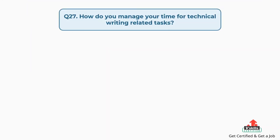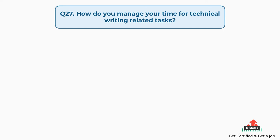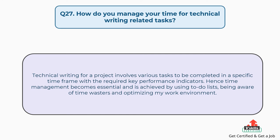Question number twenty-seven: how do you manage your time for technical writing related tasks? Technical writing involves various tasks to be completed in a specific time frame with required key performance indicators. Time management is achieved by using to-do lists, being aware of time wasters, and optimizing my work environment.